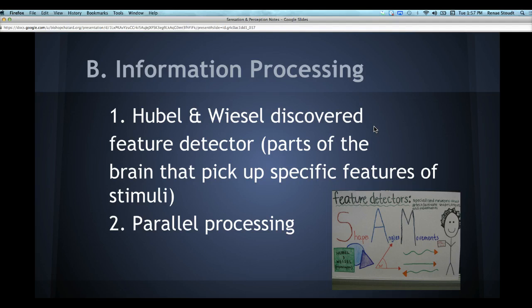I put this picture up because I found this one, this must have been somebody's psychology project, where they were explaining that feature detectors, it says, specialized neurons that detect or differentiate differences in shapes, angles, and movements. So SAM: shapes, angles, and movements.